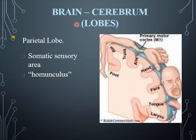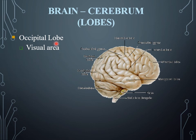The lobes of the cerebrum include the parietal lobe, which contains the somatic sensory area and has the homunculus. The occipital lobe contains the visual area, meaning it is involved in the sense of vision.